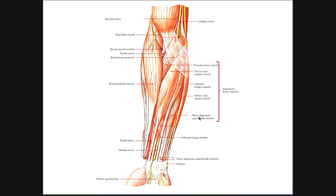There's a fifth muscle that is sometimes grouped with the superficial flexor muscles, and sometimes given its own layer because it's a little bit deep to these muscles. That's called flexor digitorum superficialis. If we look at the position of this muscle, we see that it lies basically between palmaris longus and flexor carpi ulnaris. So this is flexor digitorum superficialis — let's take a look at that muscle.